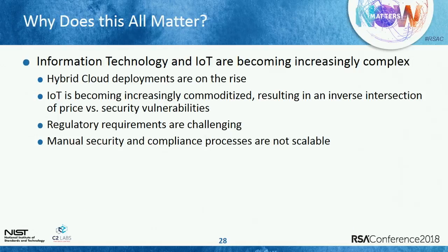Why does this all matter? Information technology and IoT are increasingly complex; hybrid cloud deployments are on the rise. IoT is being built at incredibly low cost and deployed throughout our enterprises, driving an inverse relationship between price and security vulnerabilities — as IoT device prices go down, security vulnerabilities go up, because it's built to the lowest common denominator of price. Given these challenges, systems still have to fall within a regulatory framework, and these manual security and compliance programs are not scalable. We need some sort of method and vehicle — thus this project — to solve this problem.